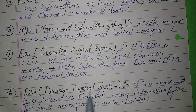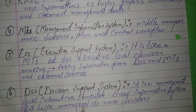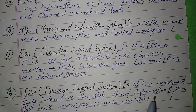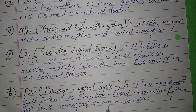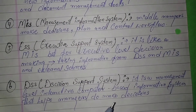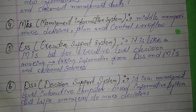The sixth is DSS, that is Decision Support System. It is a management level interactive computer based information system that helps managers to make decisions. So these were the six types of computer based information systems. Thank you.